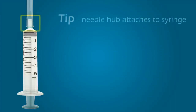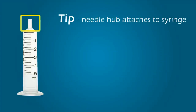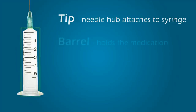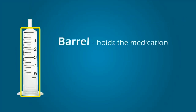The syringe. The tip is where the needle hub attaches to the syringe. The barrel is a reservoir for holding the syringe's contents. The content may include liquids or gases, but for the rest of this lesson, I will just refer to the content as medication.